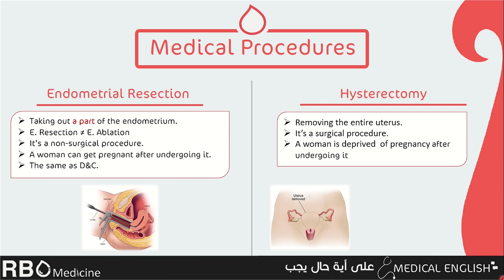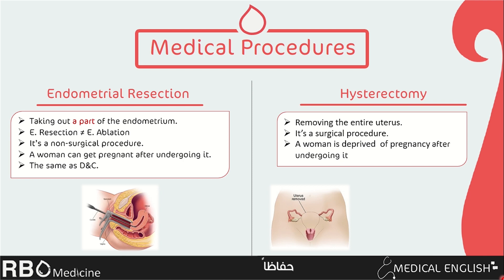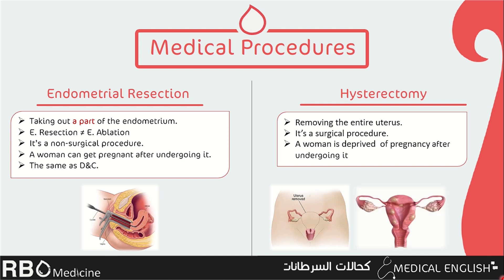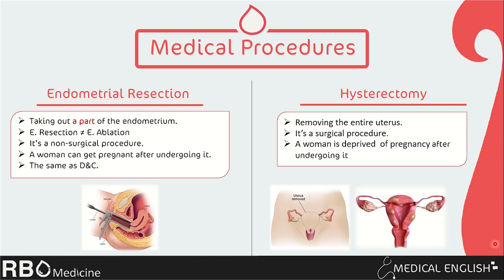Hysterectomy is a surgical procedure which includes making an incision in the abdomen to remove the entire womb. Since the vagina and ovaries are left, a woman can still have sex and her sexual desires are not affected, but she is deprived of pregnancy. So hysterectomy is a more traumatic procedure than endometrial resection. However, in some cases the womb must be removed to save the woman's life, such as in the presence of cancers, malignancy, and fibroids.